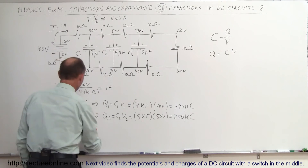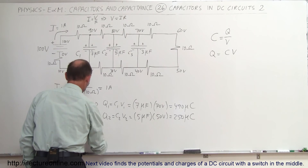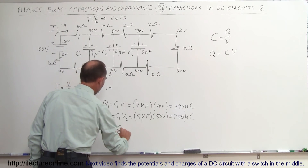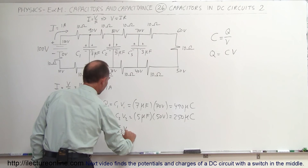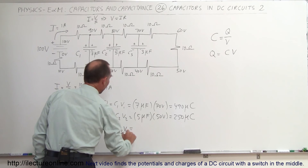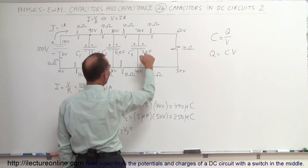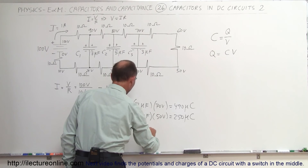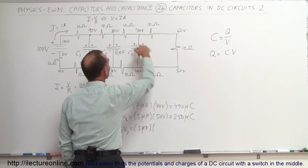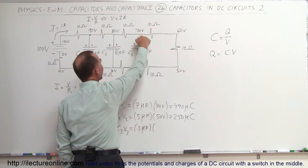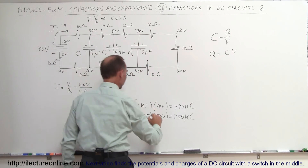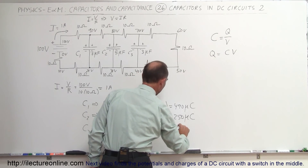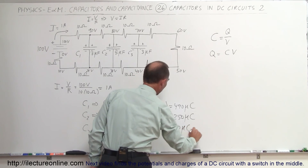On the third capacitor C3, Q3 is equal to C3 times V3. The capacitance is 3 microfarads, and the voltage across this one is 70 minus 40, which is 30 volts. That gives 90 microcoulombs on the third capacitor.